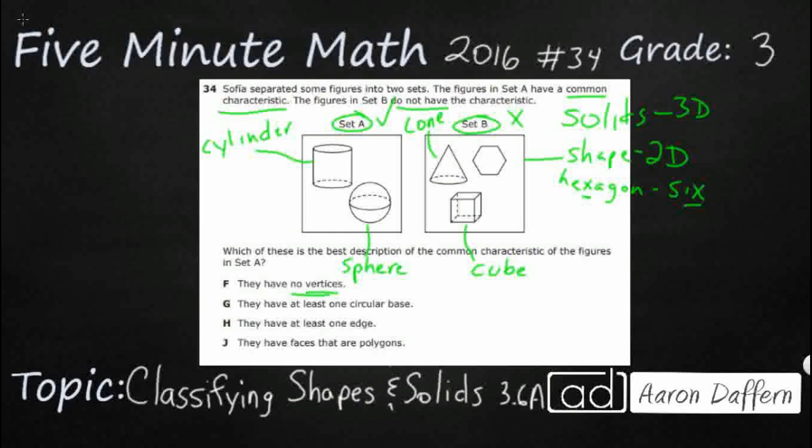So we've got set A has no vertices. Well, a vertex, when I say vertices, vertex is when you've got just one. Vertices is more than one. And it's typically what we call a corner. So that's where typically three or more edges will meet or two sides if you're talking about a 2D shape.